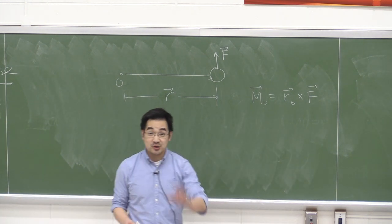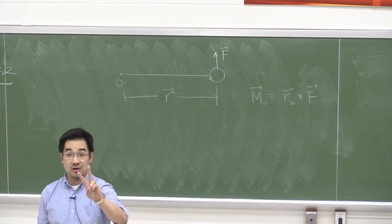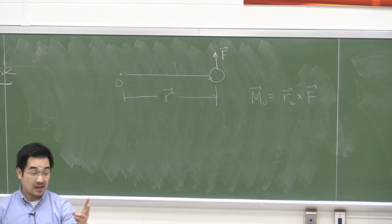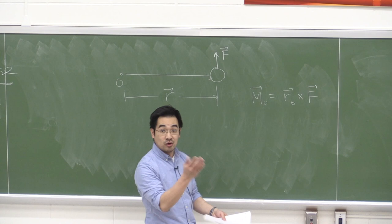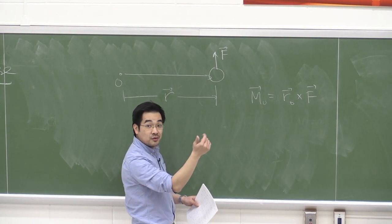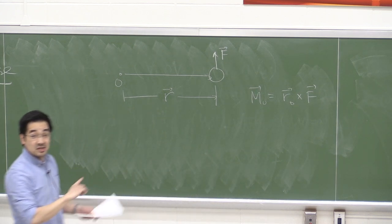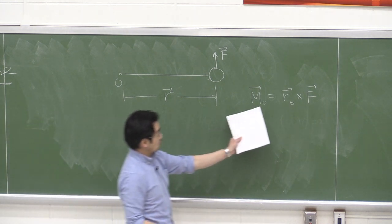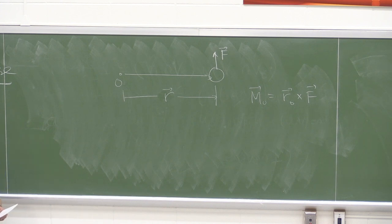For dot products, the order of the two vectors doesn't matter — A dot B equals B dot A. For cross products, the order absolutely matters. If you go r cross F, your thumb points out of the board. If you go F cross r, your thumb points into the board. The vectors are opposite each other, so the order is critical.